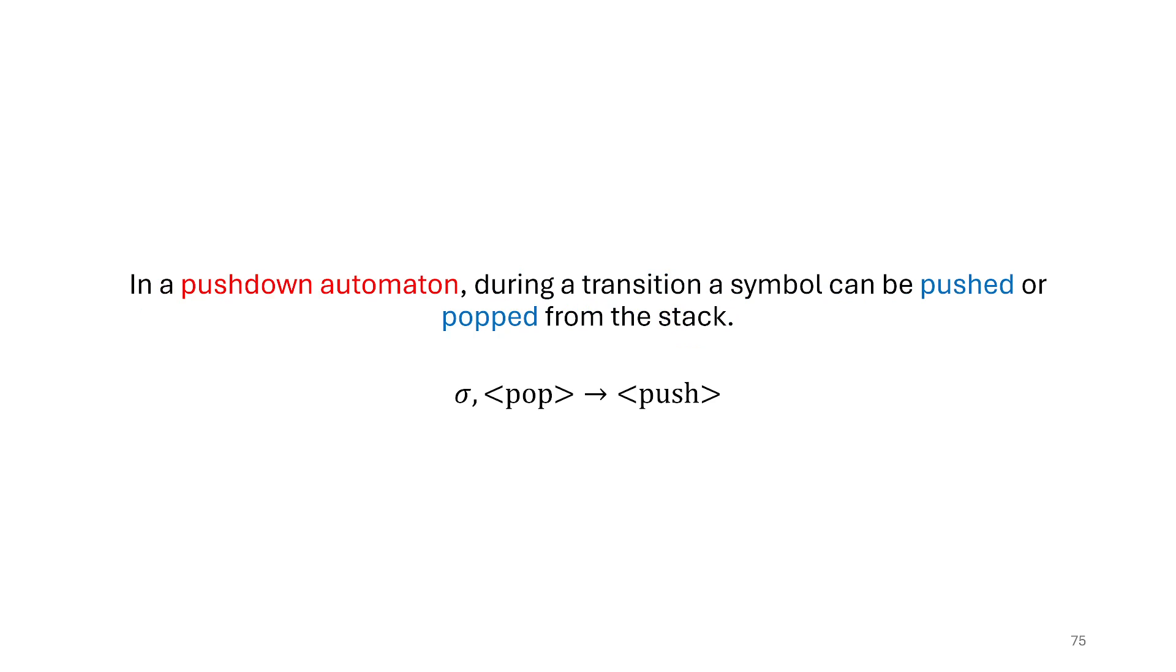So in a normal non-deterministic finite automata, when we would label a transition we would usually just label it with a sigma, some symbol from the alphabet. Now what we're going to do is label it with a symbol and a rule about what we're doing to the stack. It's possible that we could do two things: we can push or we can pop. We're treating this as a mathematical function. It's saying if you are reading this symbol and you can pop this off of the top of the stack at this moment, then you could also push it, and this is usually labeling a state transition that moves you from one state to another.